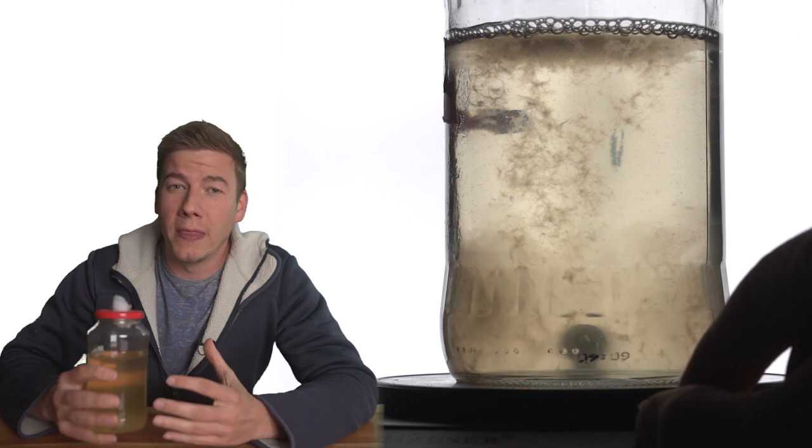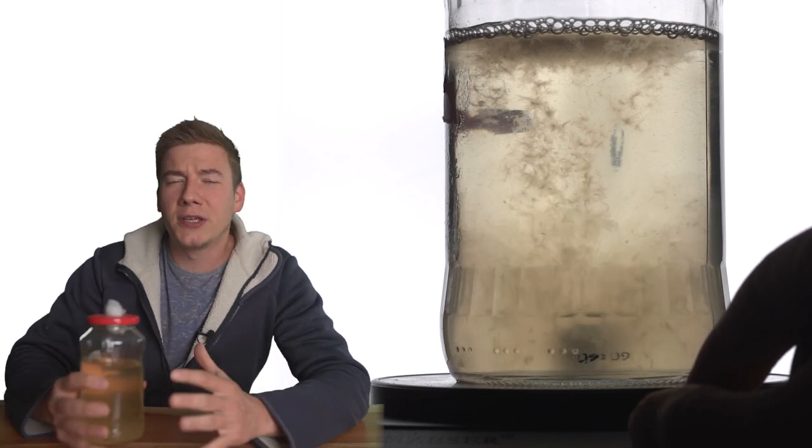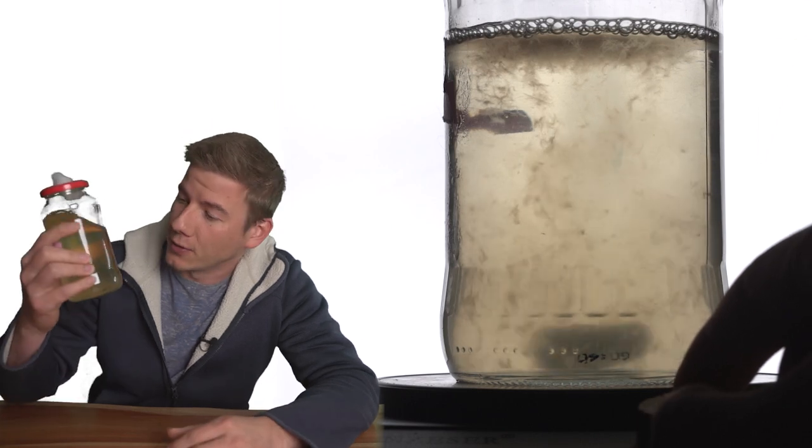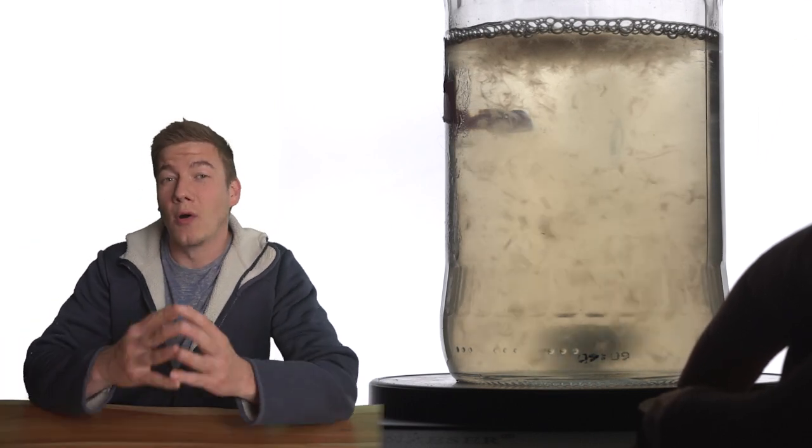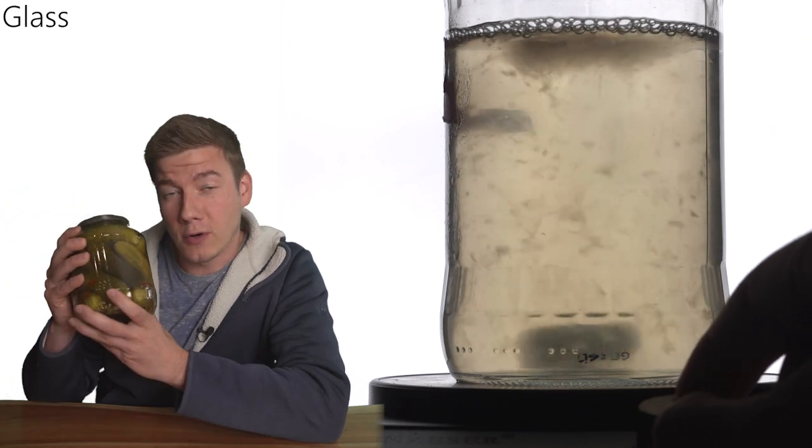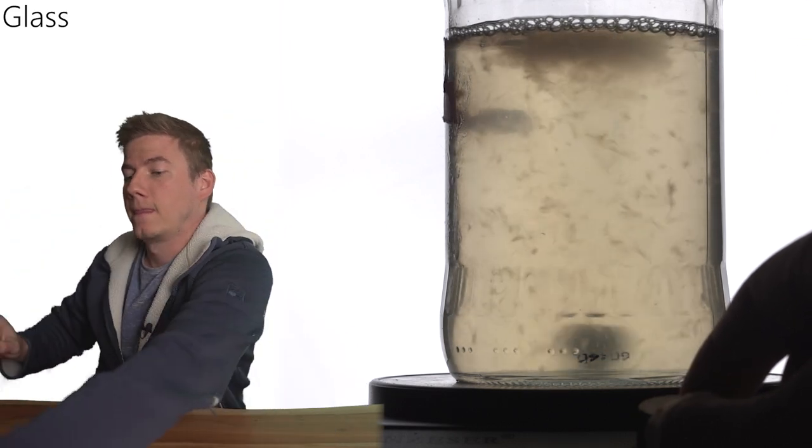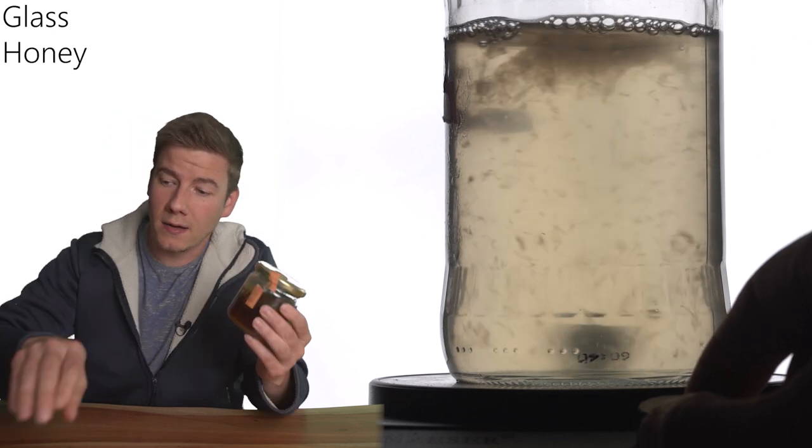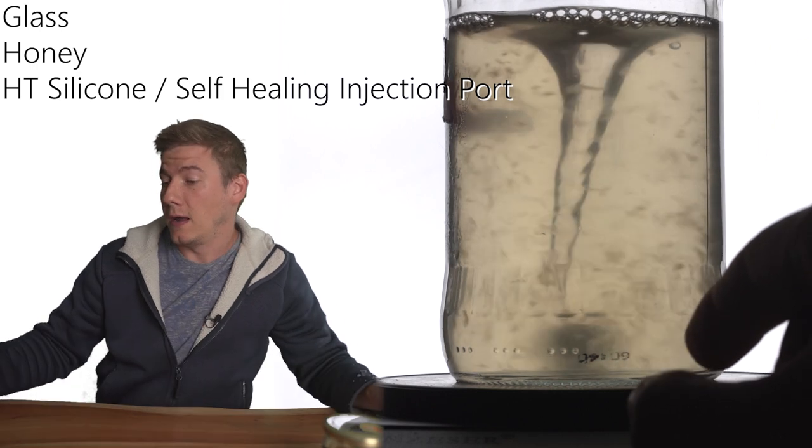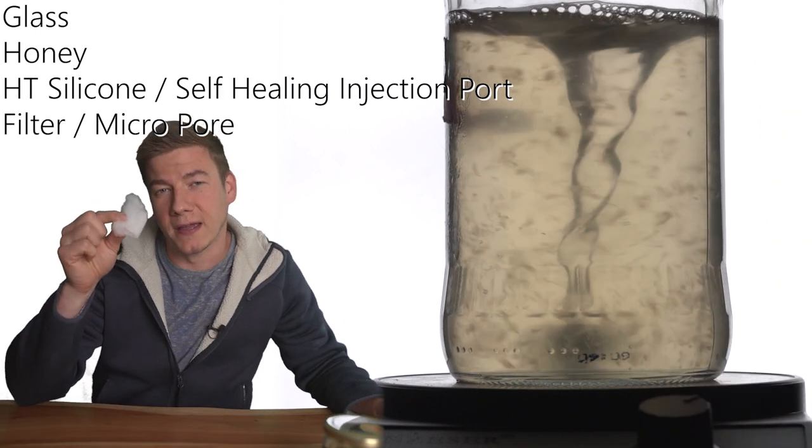With my recipe and the technique I'm going to show you in this video today, you'll be able to grow a huge amount of mycelium within one week. Let's take a closer look. Everything you need to create your own liquid culture is basically sour cucumber, fresh honey, high temperature silicon or a self-healing injection port, and some cheap filter tape.